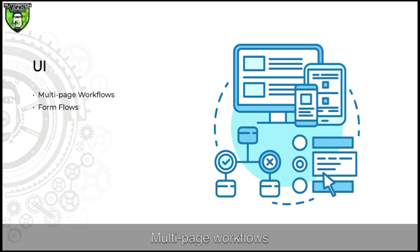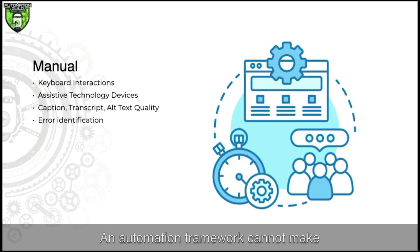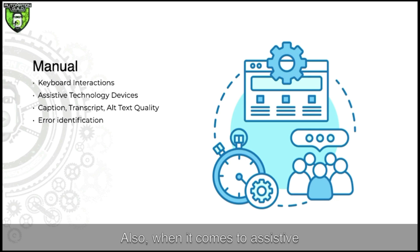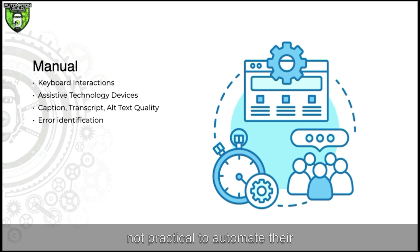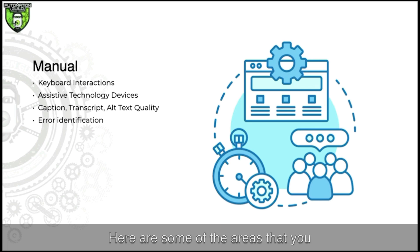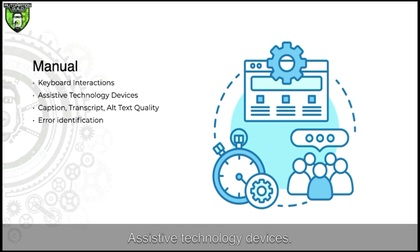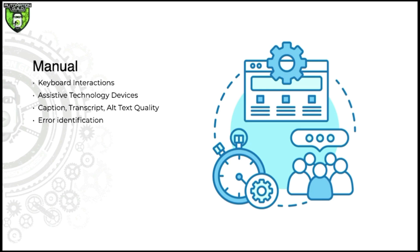For manual testing: an automation framework cannot make subjective interpretations about whether something is or isn't accessible. Also, when it comes to assistive technology devices and software, it's either impossible or not practical to automate their operations. The heart of accessibility is the human experience, which is why manual testing is priceless and a necessity. Areas to focus on manually include keyboard interactions, assistive technology devices, caption and transcript and alt text quality, and error identification.